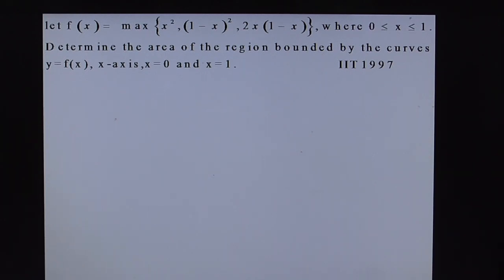This question is for area bounded by curves or area of region bounded by curves. Let f of x equal maximum of x square, 1 minus x whole square, 2x of 1 minus x. So determine the area of region bounded by the curves y equal to f(x), x axis, x equal 0 and x equal 1.